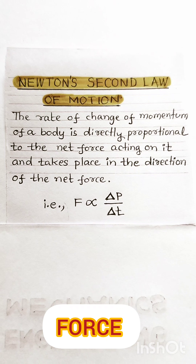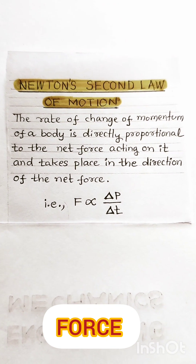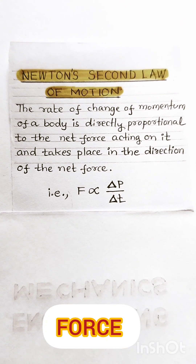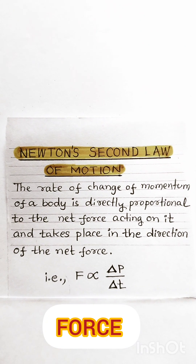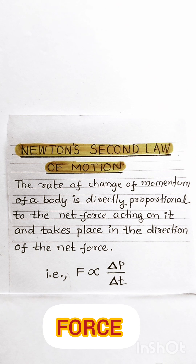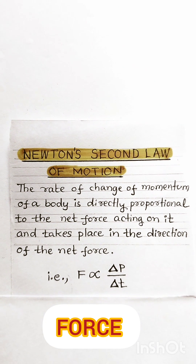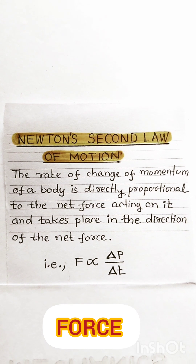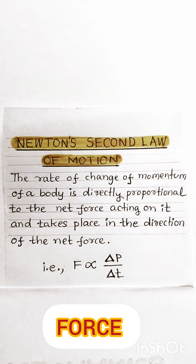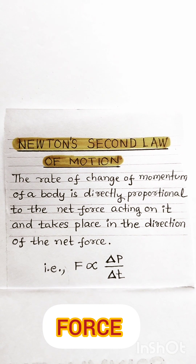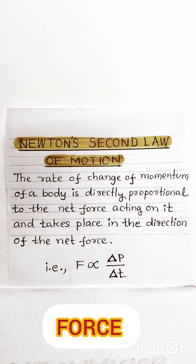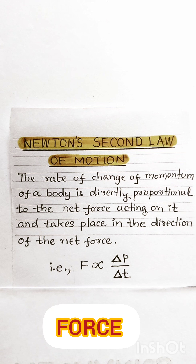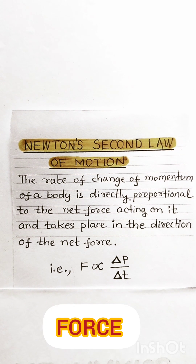The magnitude of pull or push can be estimated by the following statement. This statement was proposed by Newton — it is Newton's Second Law of Motion. According to this law, the rate of change of momentum of a body is directly proportional to the net force acting on it, and takes place in the direction of the net force.